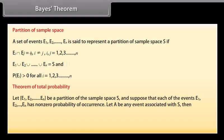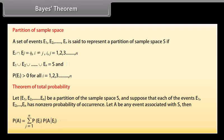Let A be any event associated with S. Then P(A) = Σ (j=1 to n) P(Ej) × P(A|Ej).